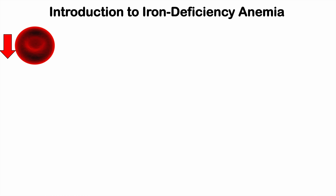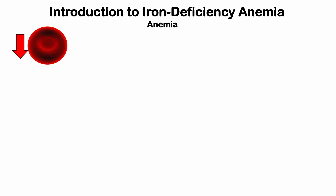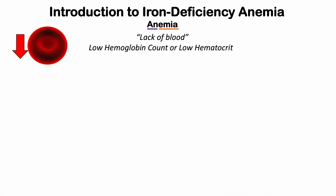Iron deficiency anemia — if we were to look at the word anemia and break it down, the prefix 'an' refers to lack and 'emia' refers to a blood condition. So anemia essentially means lack of blood, and more specifically means a low hemoglobin count or low hematocrit. There are particular numbers for the cutoff for hemoglobin and hematocrit to make a diagnosis of anemia.